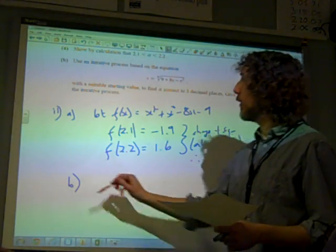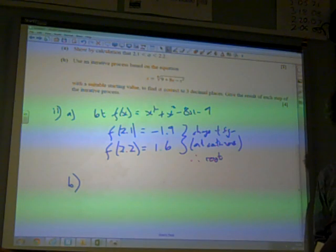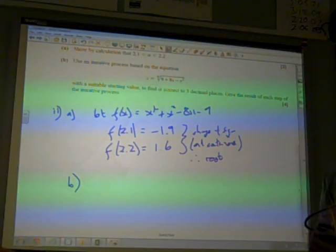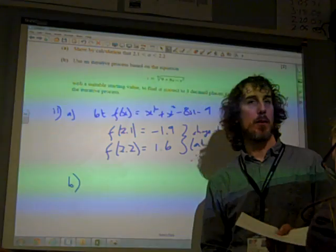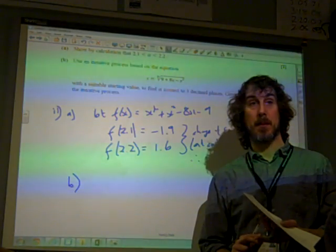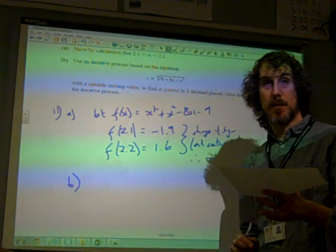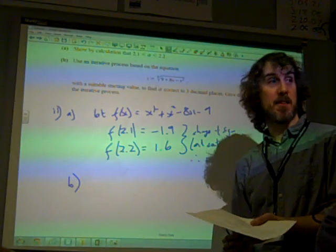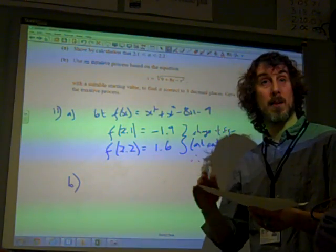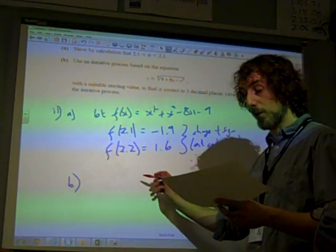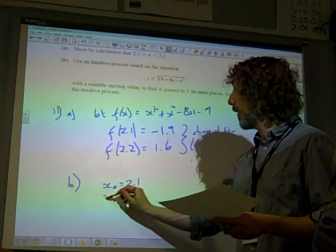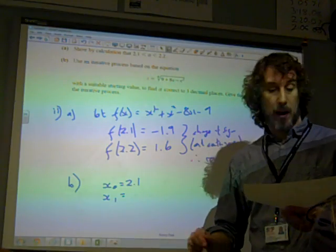Part B. Use an iterative process based on the equation with a suitable starting value. We've talked about this before. To find alpha correct three decimal places. What's a suitable starting value? Well, the route is between 2.1 and 2.2. So either 2.1 or 2.2 would be a suitable starting value. Quite a few students started at 2, which is not that unreasonable. Actually, it would work so long as you started between minus 1 and 9. You would get the route. But sensibly, 2.1 or 2.2 we're talking about here.